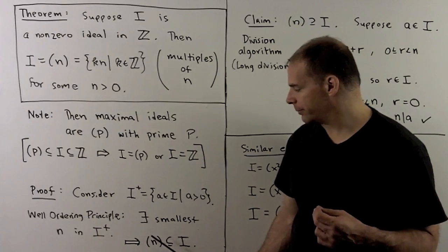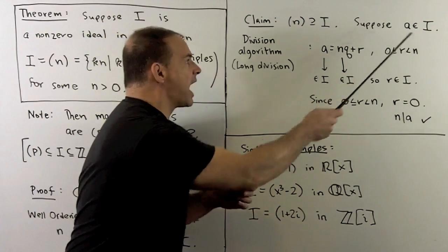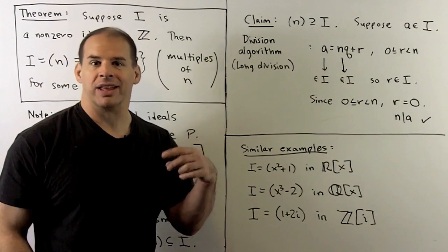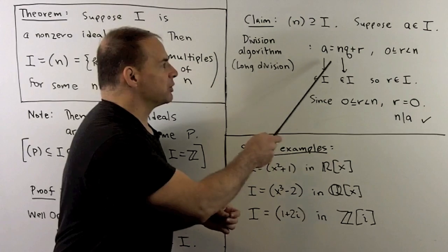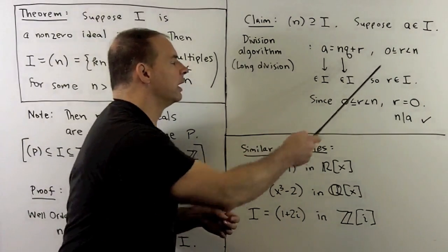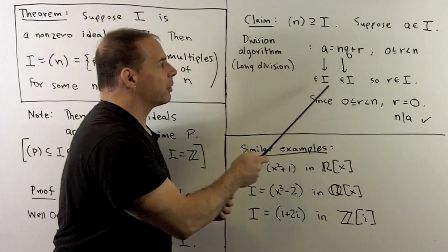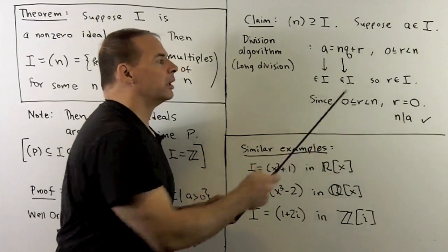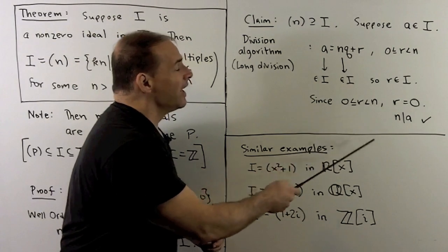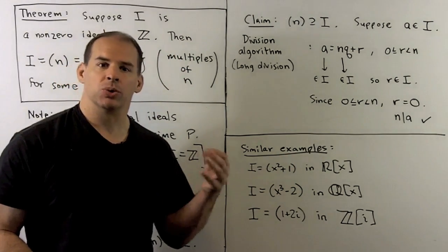We want to show the other direction. Suppose we have some a that's in I; we'll show that a is a multiple of n. By the division algorithm for integers — that's just long division — I can write a as n times q plus r, where r is between 0 and n, including 0. Now a is in I, n is in I, so n times q is in I. That means by the ideal property, r is in I. Because r is between 0 and n, and n is the least element, that forces r to equal 0, so n divides a.